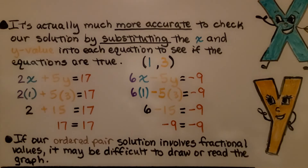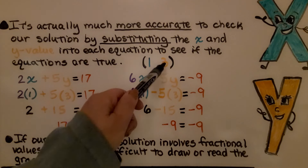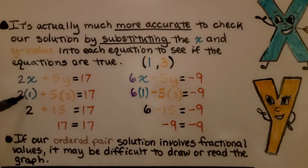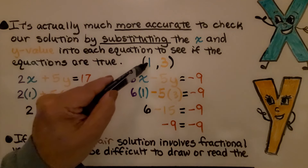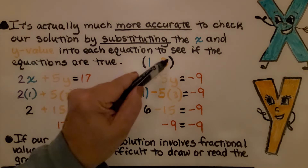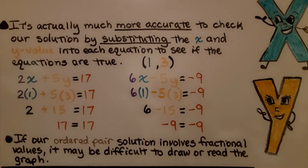It's actually much more accurate to check our solution by substituting the x and y values into each equation to see if they're true. We came up with x equals one and y equals three, and substituting confirms both equations hold. If our ordered pair solution involves fractional values — like 1.37 for x and 3.58 for y — it would be very difficult to draw or read those values accurately on a graph.